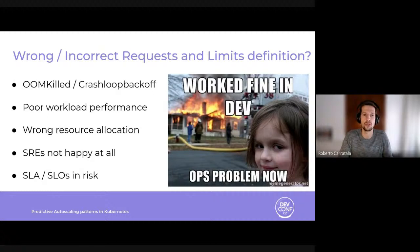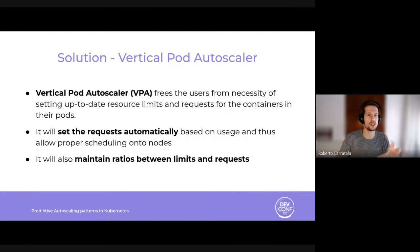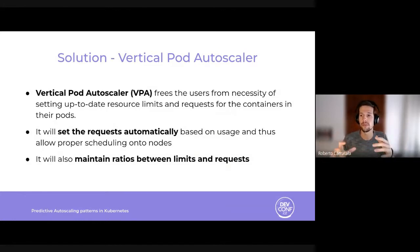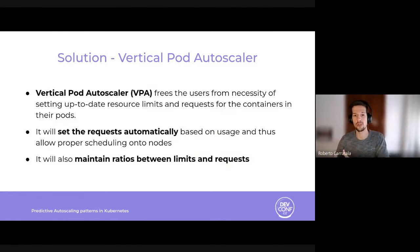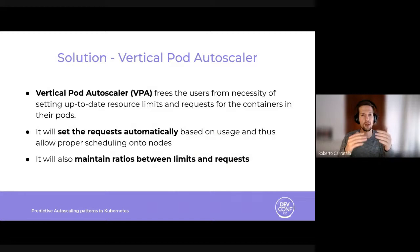So what's the solution? Enter the Vertical Pod Autoscaler. The Vertical Pod Autoscaler, or VPA, frees users from the necessity of manually setting up-to-date resource limits and requests for containers in the pod. It will automatically set requests based on usage and metrics, defining proper thresholds for scheduling onto nodes. It also maintains ratios between limits and requests specified in the initial container configuration and adapts the container definition by predicting resource consumption across the container lifecycle.